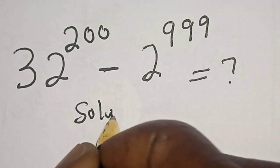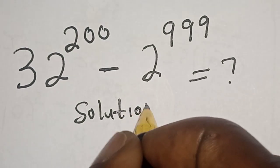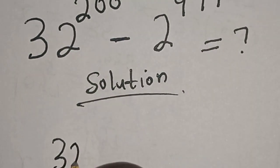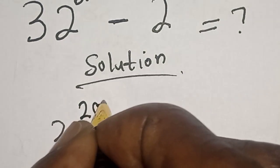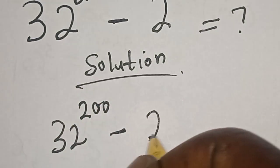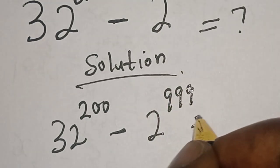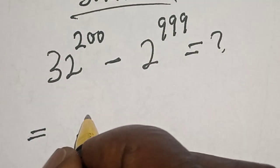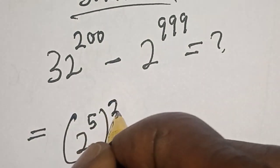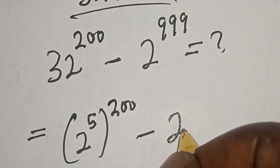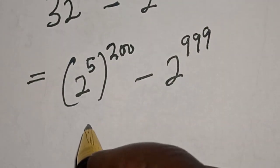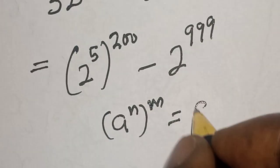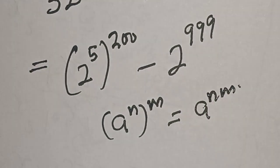Solution. We have the given question: 32 raised to power 200 minus 2 raised to power 999 is equal to what. This is equal to: 32 is 2 raised to power 5, raised to power 200, minus 2 raised to power 999. Remember this rule that a raised to power n, raised to power m, is equal to a raised to power n times m.